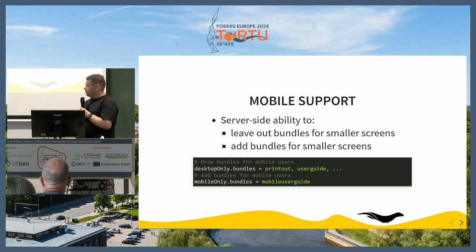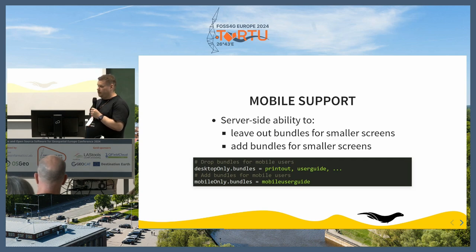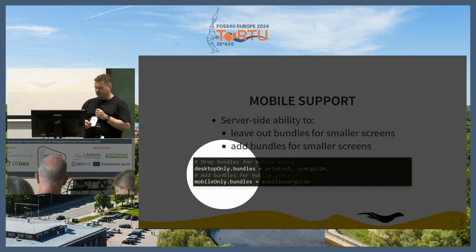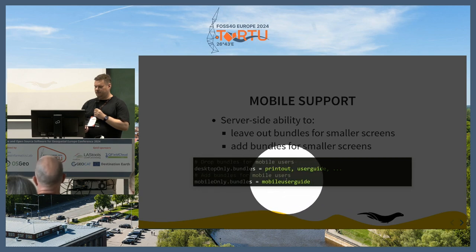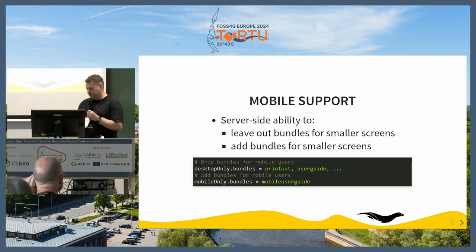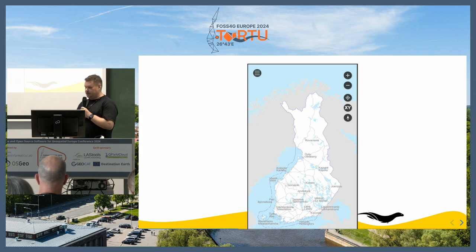For mobile support on the server side, you can configure things to be left out for mobile users. You don't really want to give every possible option available on desktop to mobile users. This is a simple way of dropping some functionalities for desktop or mobile. For example, we drop the user guide for desktop and for mobile users add another type of user guide that only guides the user for the functionalities available on mobile. When you drop some functionalities, there's not that much on the menu.